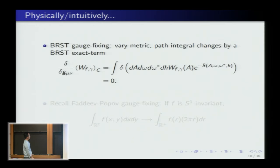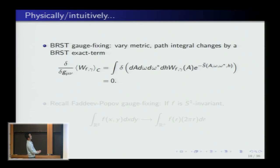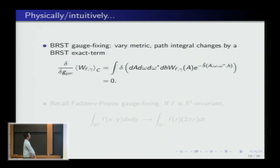How does the proof go? Intuitively, physicists know this in path integral language: this is a result of BRST gauge fixing. When you vary the metric, you vary the path integral by a BRST variation, and the integral of a BRST-exact term is zero. To do the BRST theory you need to add extra fields: a ghost, an anti-ghost, and the Nakanishi-Lautrup field. They all fit into a nice package, and when you vary the metric, you vary by a BRST-exact term and get zero.